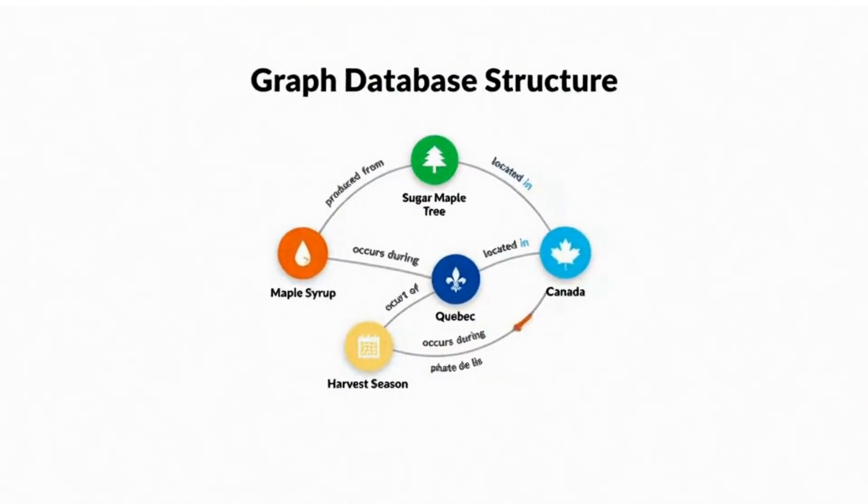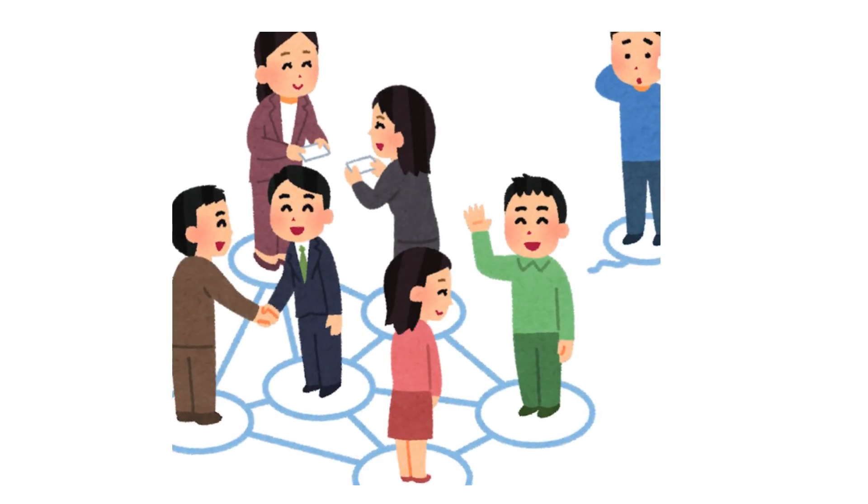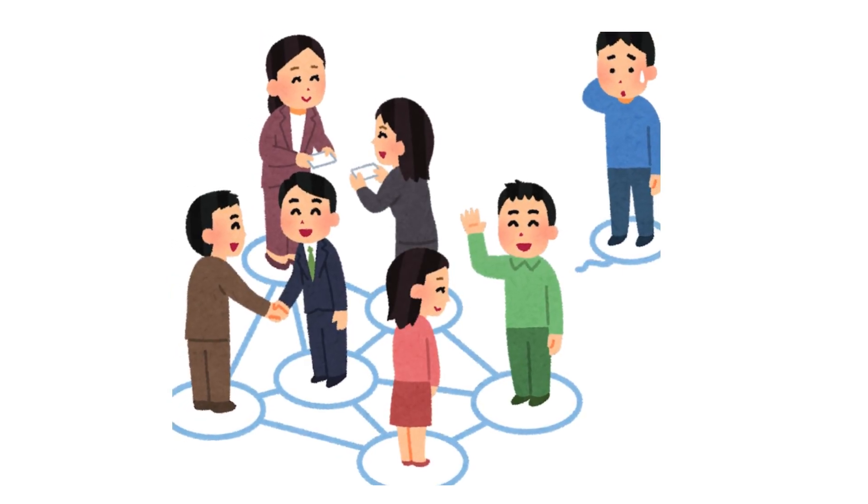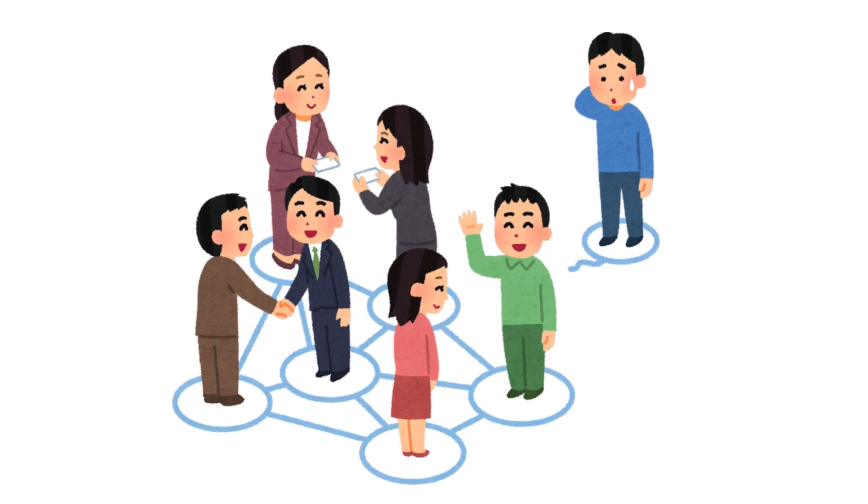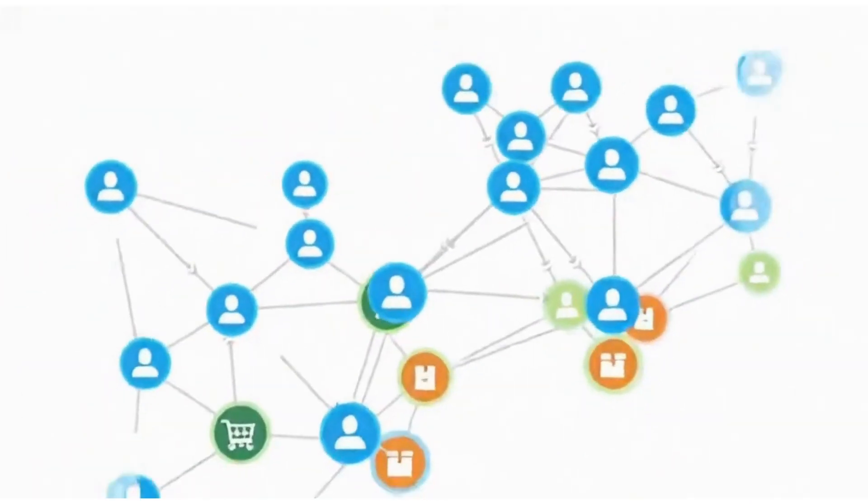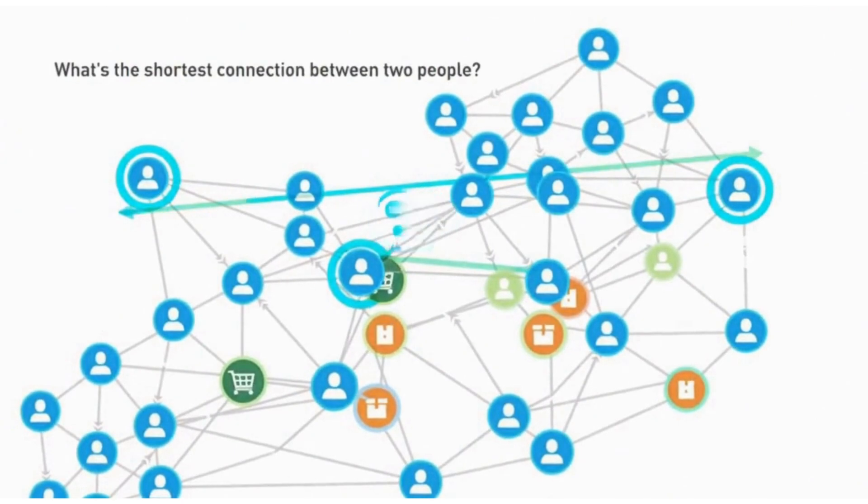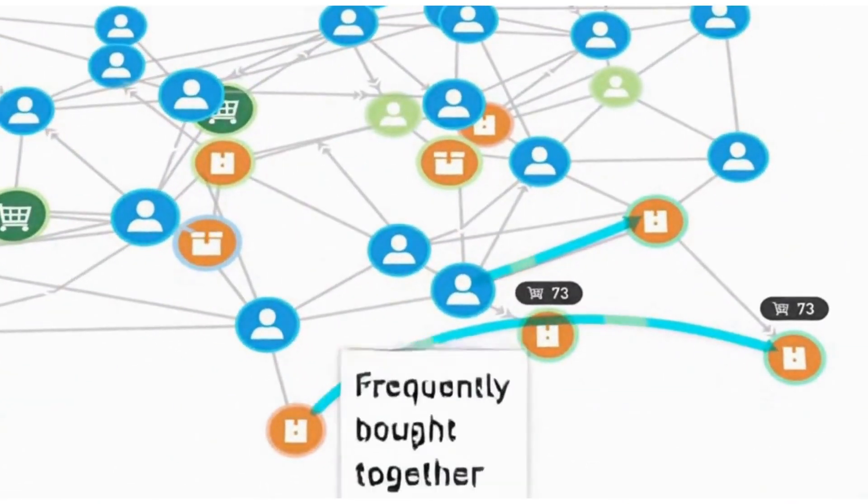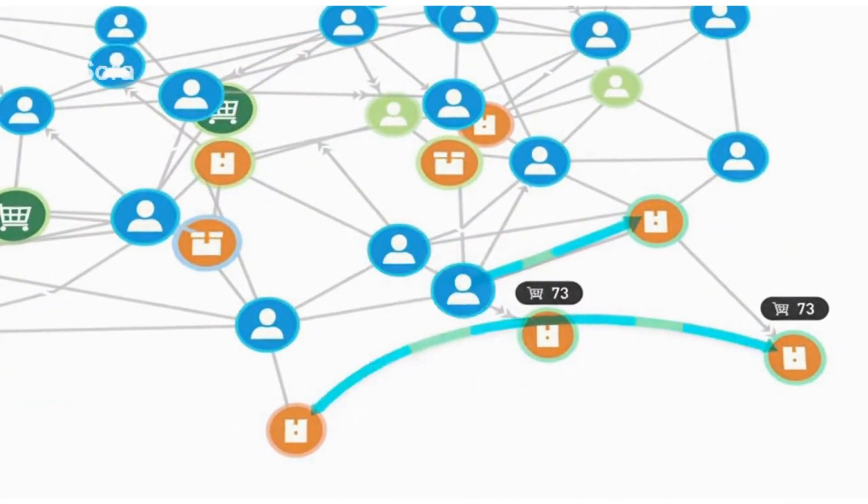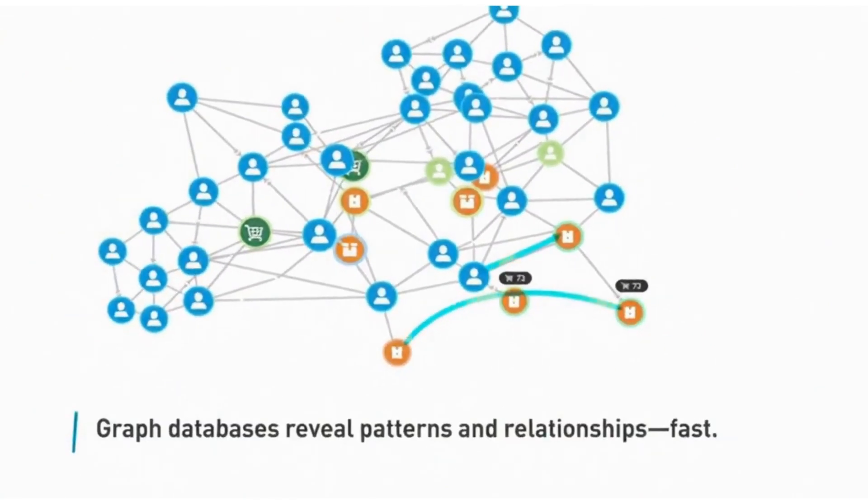For example, in a social network, each person is a node, and friendships are edges connecting them. These databases excel at finding patterns and relationships. They can quickly answer questions like, what's the shortest connection between two people? Or, which products are frequently bought together?